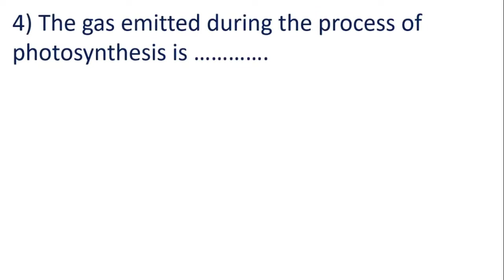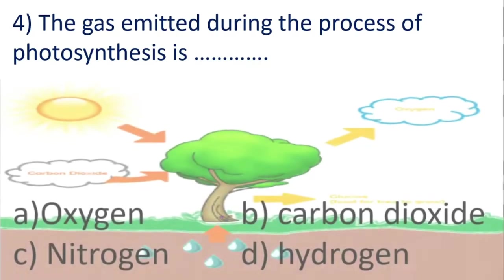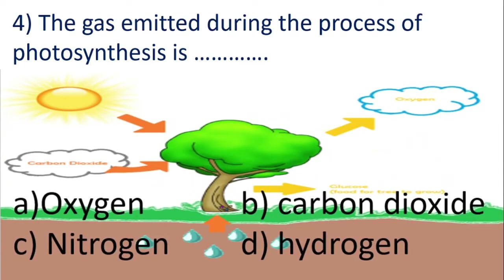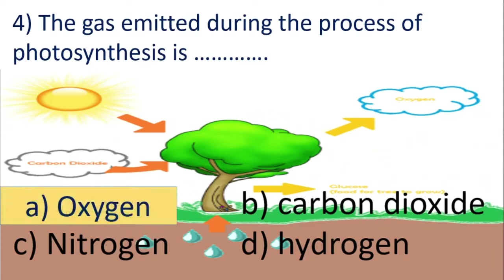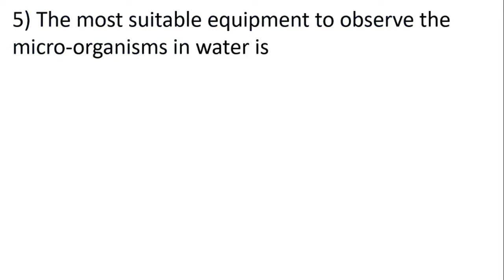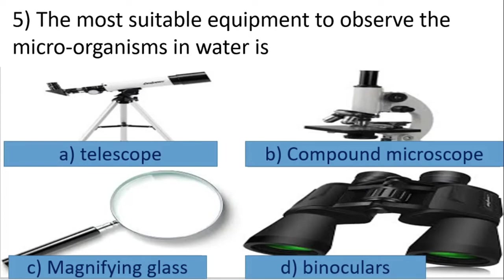Question number four: the gas emitted during the process of photosynthesis is — options are oxygen, carbon dioxide, nitrogen or hydrogen. The answer is oxygen. Question number five: the most suitable equipment to observe the microorganisms in water is — the answer is compound microscope.